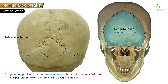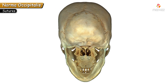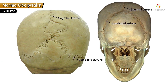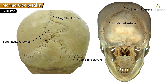Sutures visible in this view include the posterior part of the sagittal suture and the lambdoid suture. Along these sutures, small irregular star-like bones may sometimes be seen — these are known as supernumerary bones, ossified from their own ossification centers, and make no physiological difference.